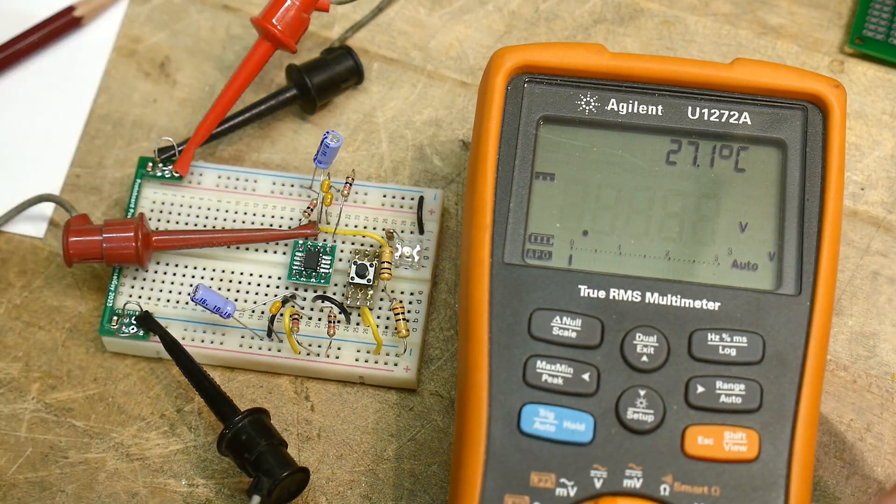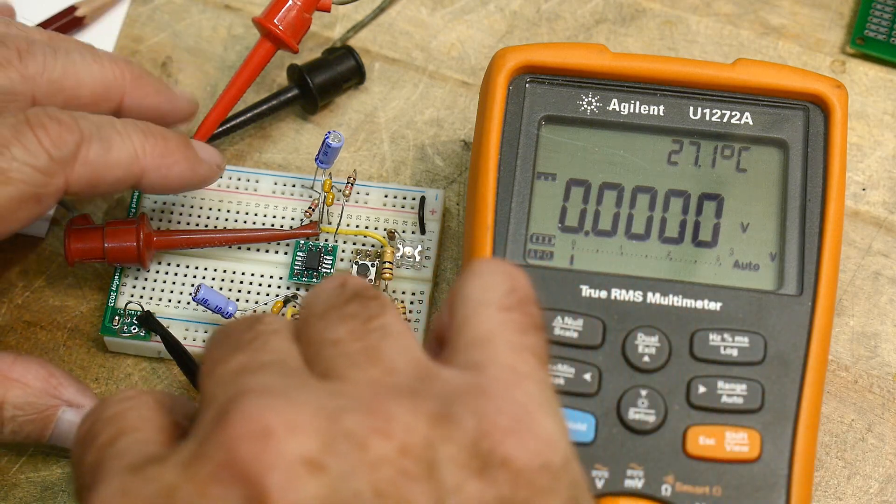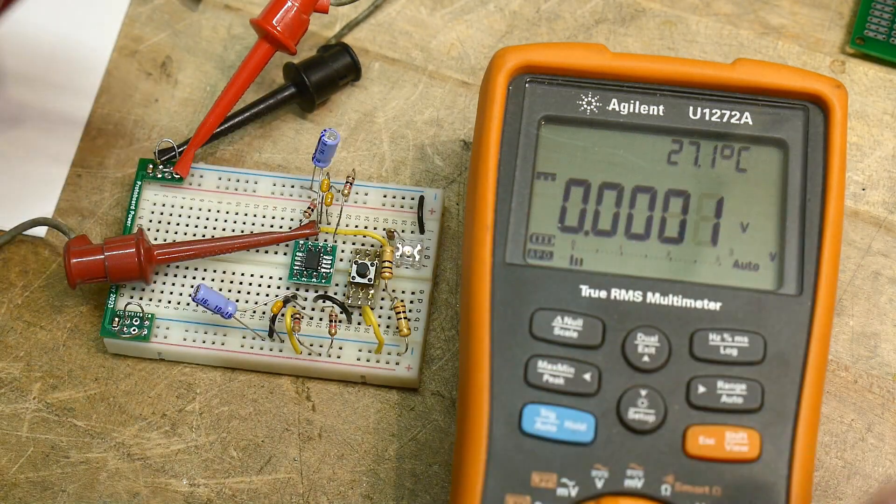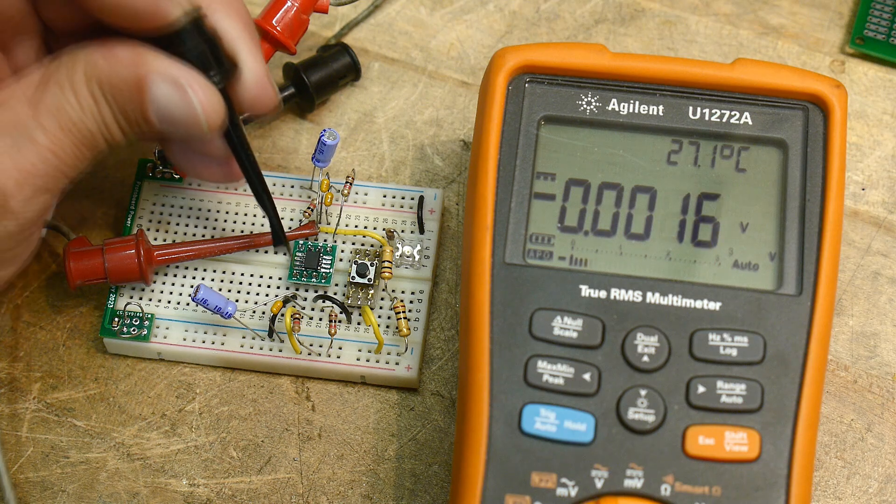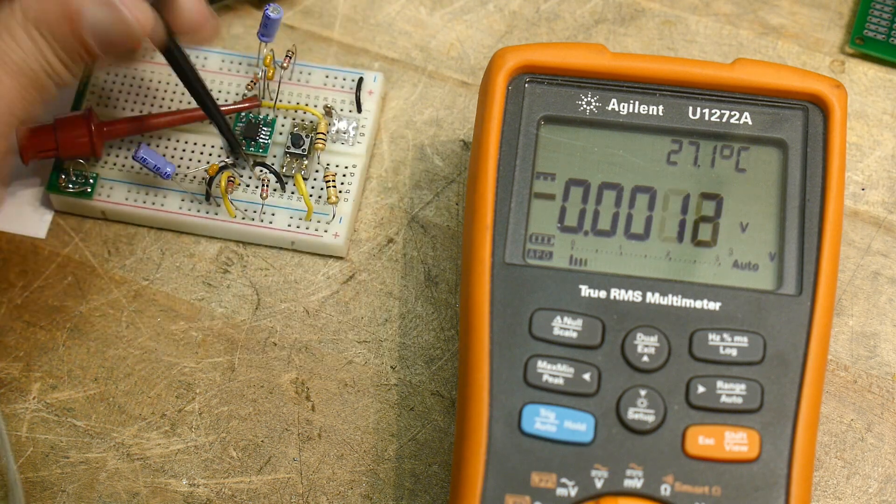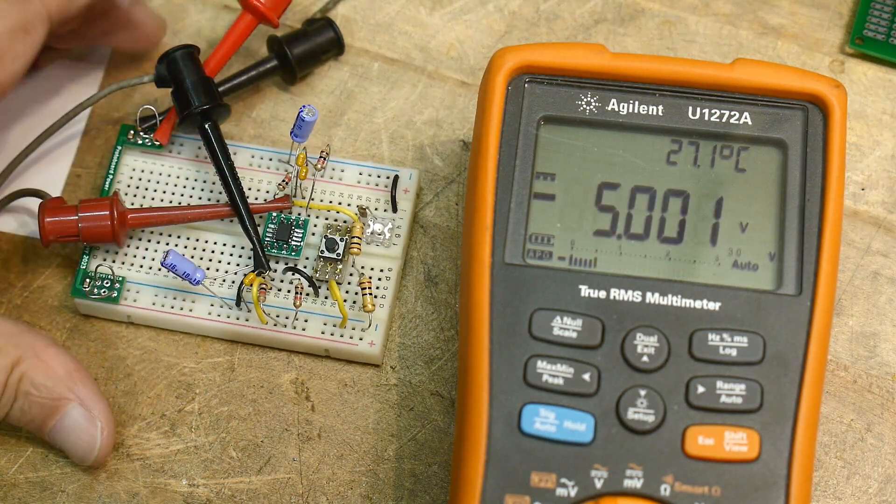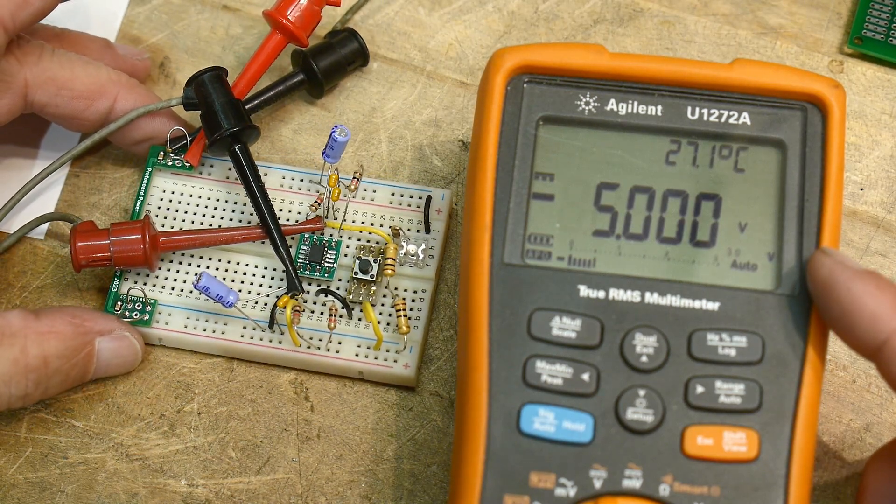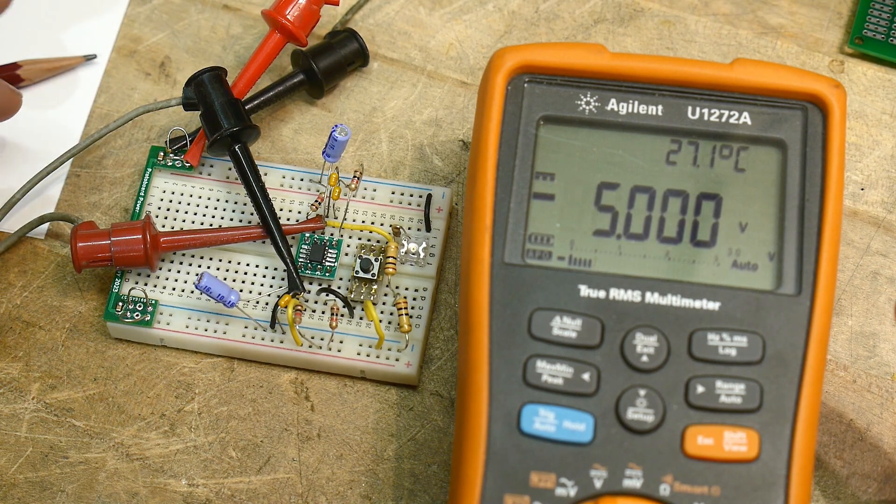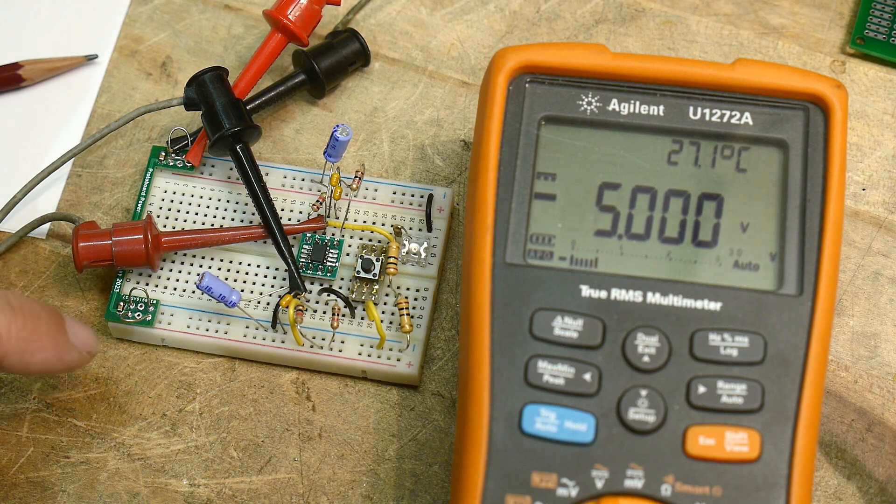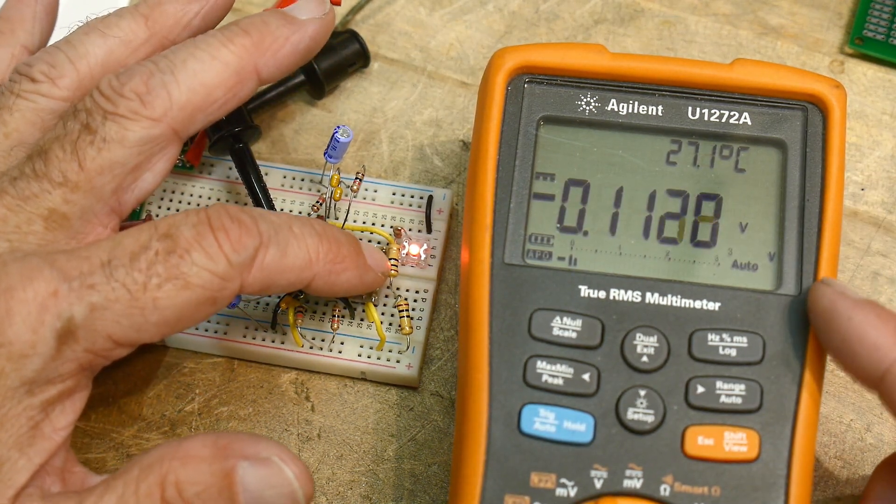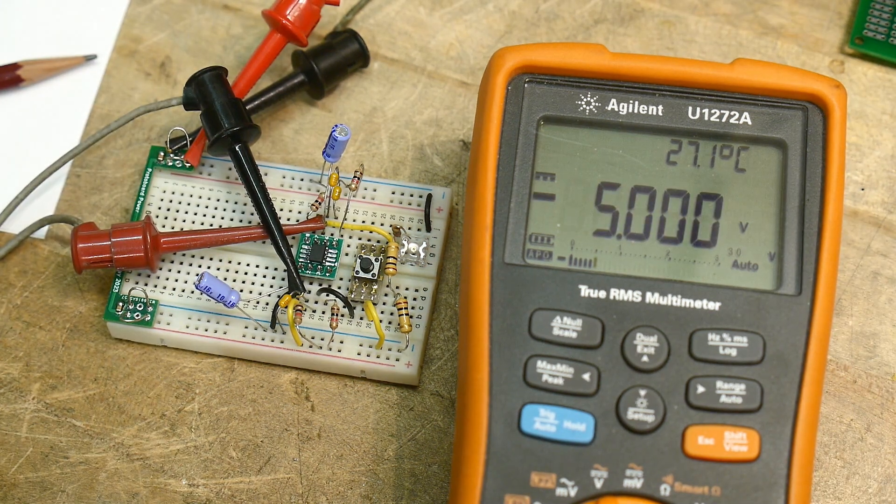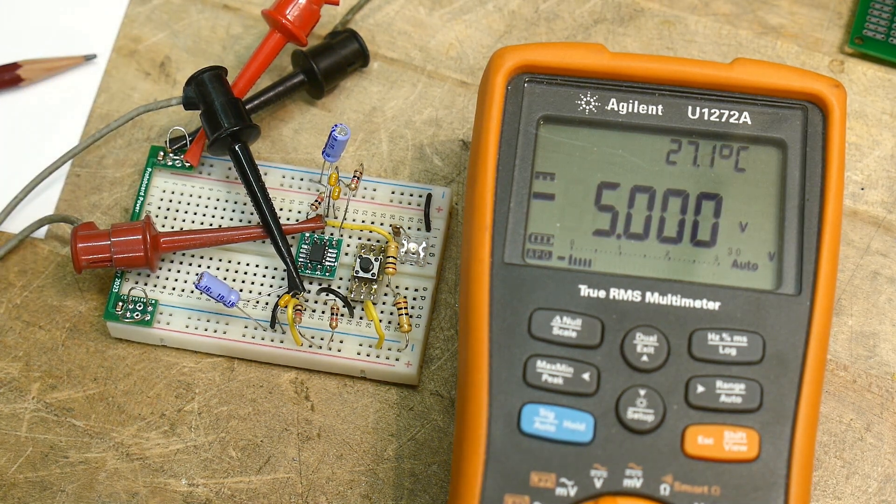Let's see, here is the input. This is the input, right? Oops. This is the input right here. And we're going to be measuring input to output and push the button. Yeah. We've got 0.11 volts. Okay. So let's do some calculations.